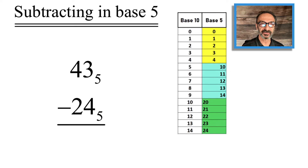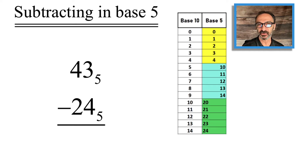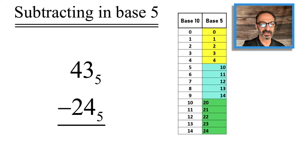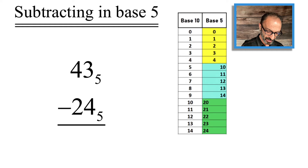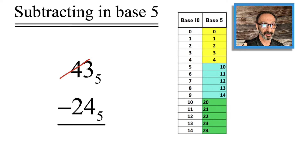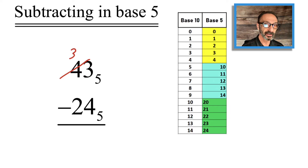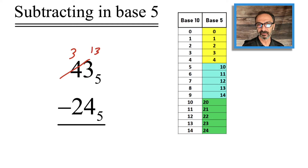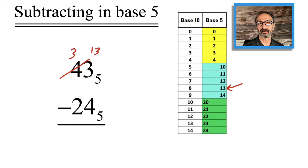The first example is subtracting in base 5: I have 4 3 minus 2 4. I'm avoiding calling it 43 minus 24 because that's our decimal system. Notice the units place has 3 minus 4 — we cannot do that. So we go next door to the 4 fives, subtract 1, making it 3 fives, and borrow 1 five over to the right side. The 3 becomes 1 3, meaning 1 five and 3 units.